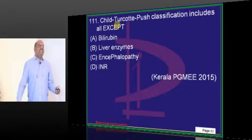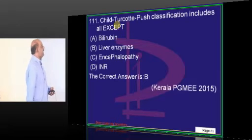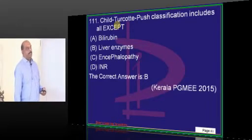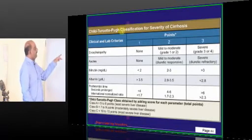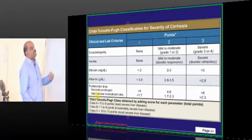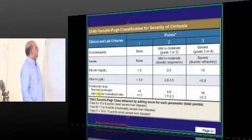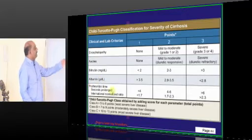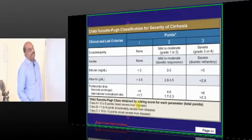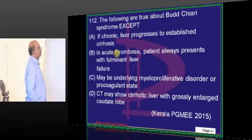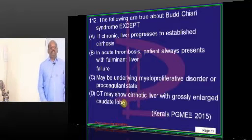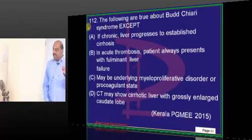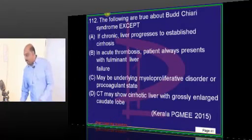The CHILD classification — what is not included — was the Kerala MCQ. The mnemonic is BANANA: B for bilirubin, A for ascites, N for neurological status, A for albumin, and prothrombin time — these are all included. Budd-Chiari syndrome is hepatic vein thrombosis.